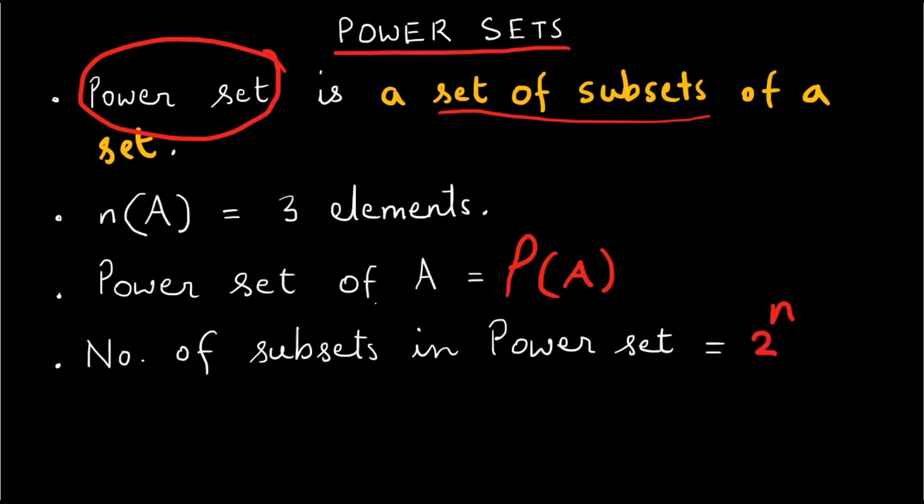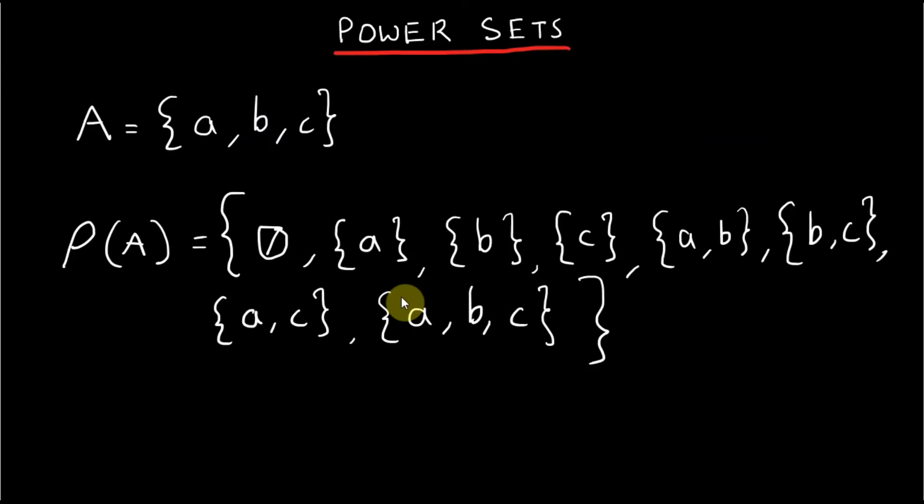In our case, set A has three elements so it has 2 raised to 3 equals 8 subsets or 8 members. The power set of set A will look like this and it has 2 guaranteed subsets: the empty set and itself as members.